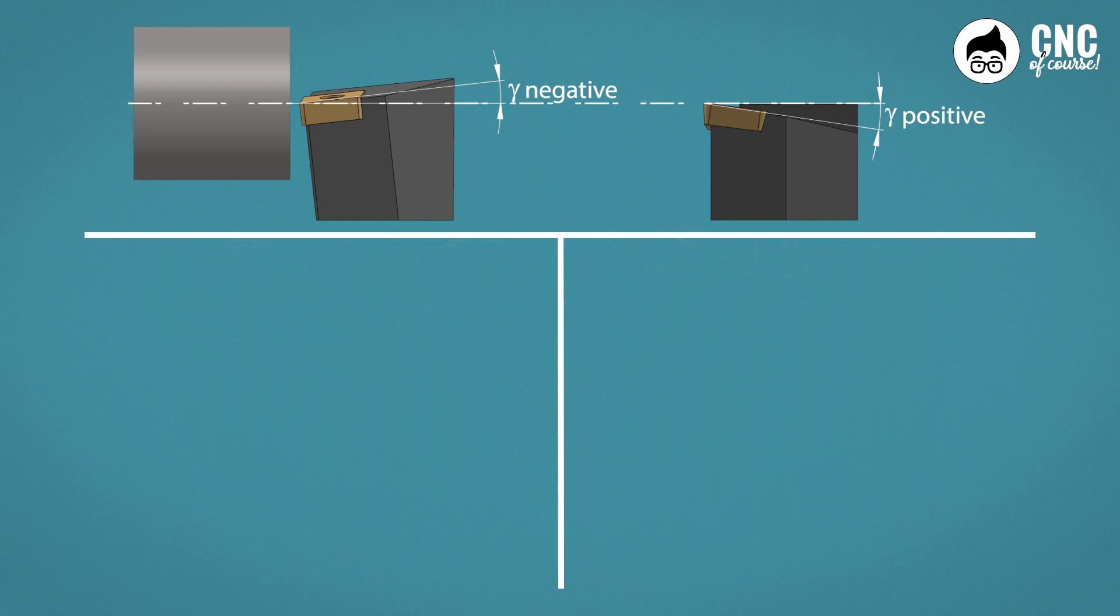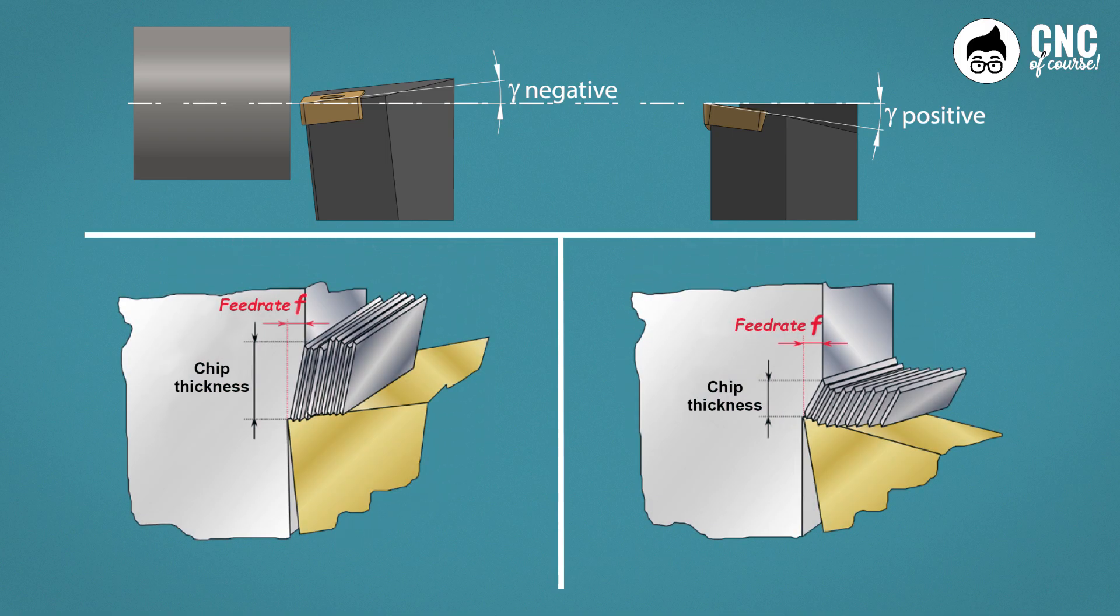Finally, the third reason. Let's go back to the picture on chip thickness. We said that the negative tool creates a greater chip thickness, and on one hand, this is a disadvantage, because with the same volume of chip removed, it generates more stress on the face of the cutting edge. But on the other hand, a greater chip thickness is exactly what we need when turning on steels.